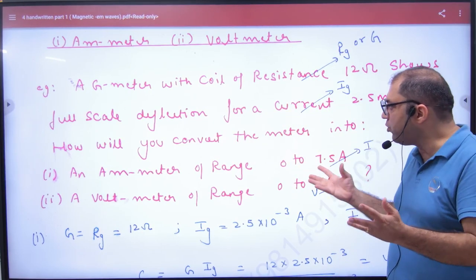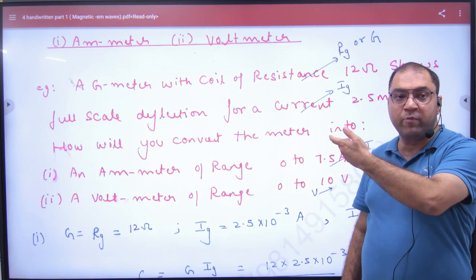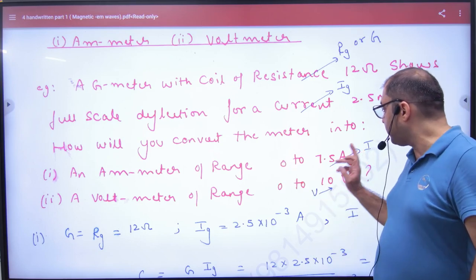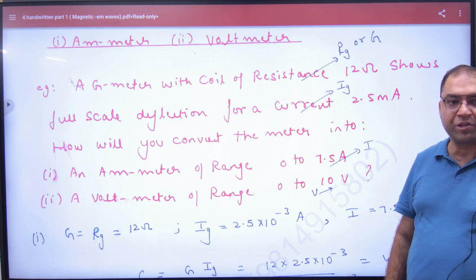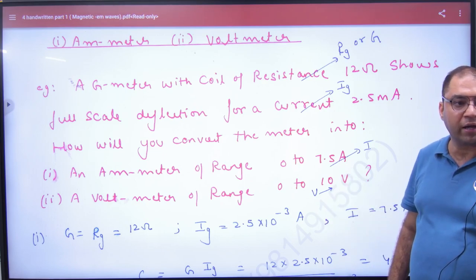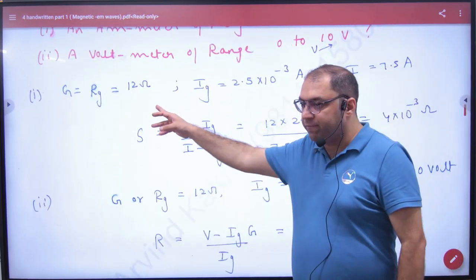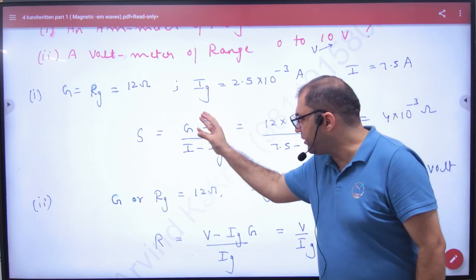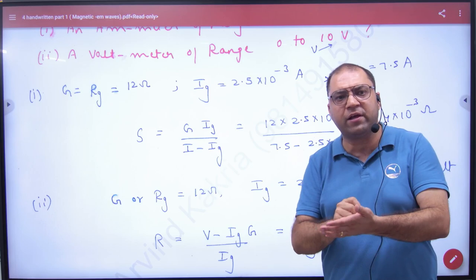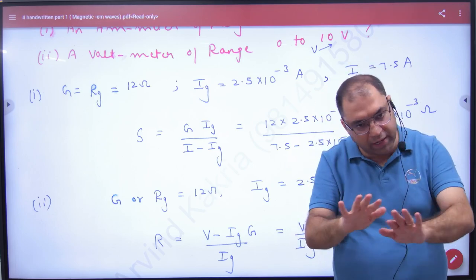How will you convert this galvanometer into an ammeter? In this galvanometer there is a small current, but I want to measure current in the range zero to 7.5 ampere. The suggestion is to use a shunt. You know G and Ig. The shunt, which is connected in parallel, is the answer for the first part.